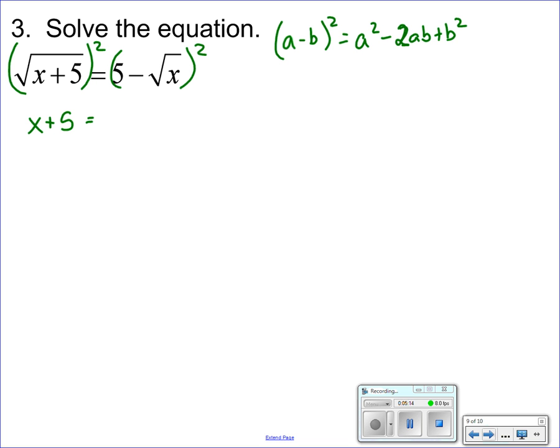So first thing, 5² is 25, minus √x times 5 times 2. I'll simplify that in a minute. I just want to show you guys that (√x)² is just x. So I have x + 5 = 25 - 10√x + x.